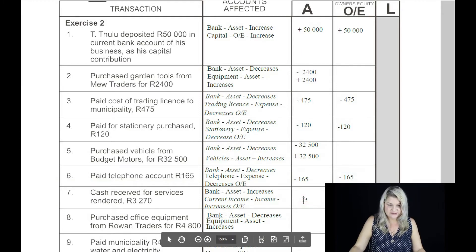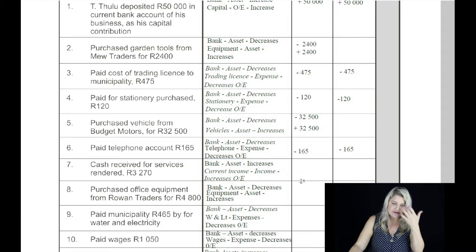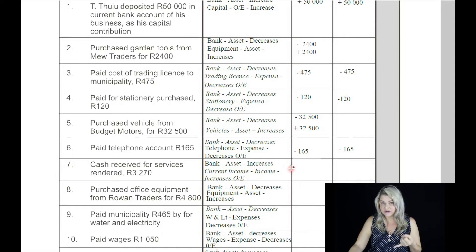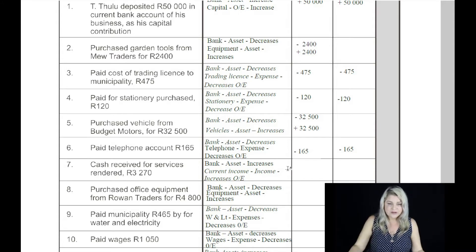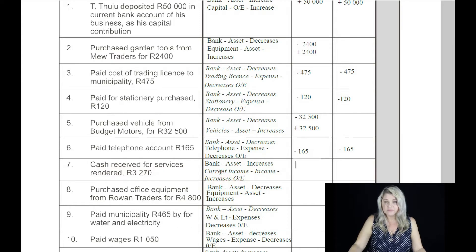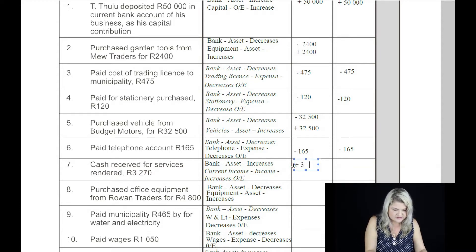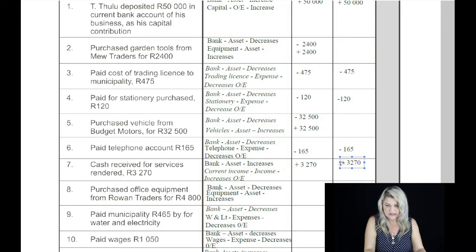Transaction number seven: cash received for services rendered, 3,270 Rand. Now we've got an income. An income always increases owner's equity, so that's why we always try to make as much sales as we can — it keeps increasing our owner's equity. We try to keep expenses lower and income higher so that we make a bigger profit. Cash received for services rendered goes into the bank account. The other account is called current income, and current income affects owner's equity positively because that's money coming in. So the bank will be increased by 3,270 Rand and owner's equity will also be increased by 3,270 Rand.